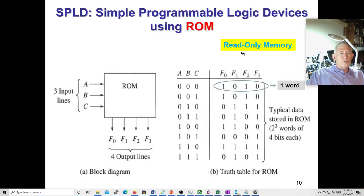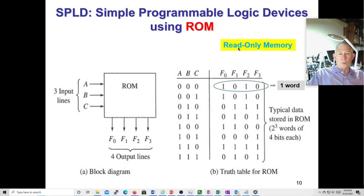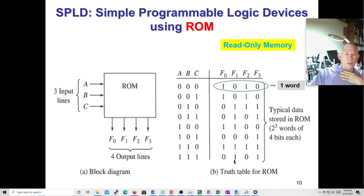These simple devices would typically have input lines and output lines, and you have your read-only memory. This is an example of using a ROM — we did this in the last lab. Basically you can program in a bunch of different functions. If you have a four-bit ROM with, say, eight rows and four columns, you can have four output functions.